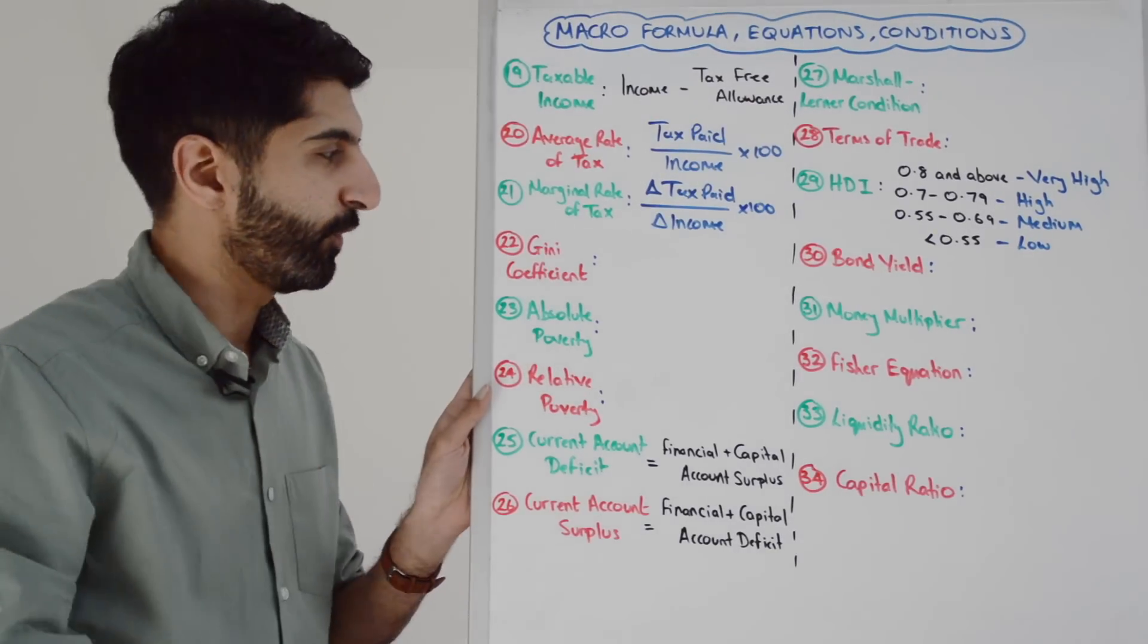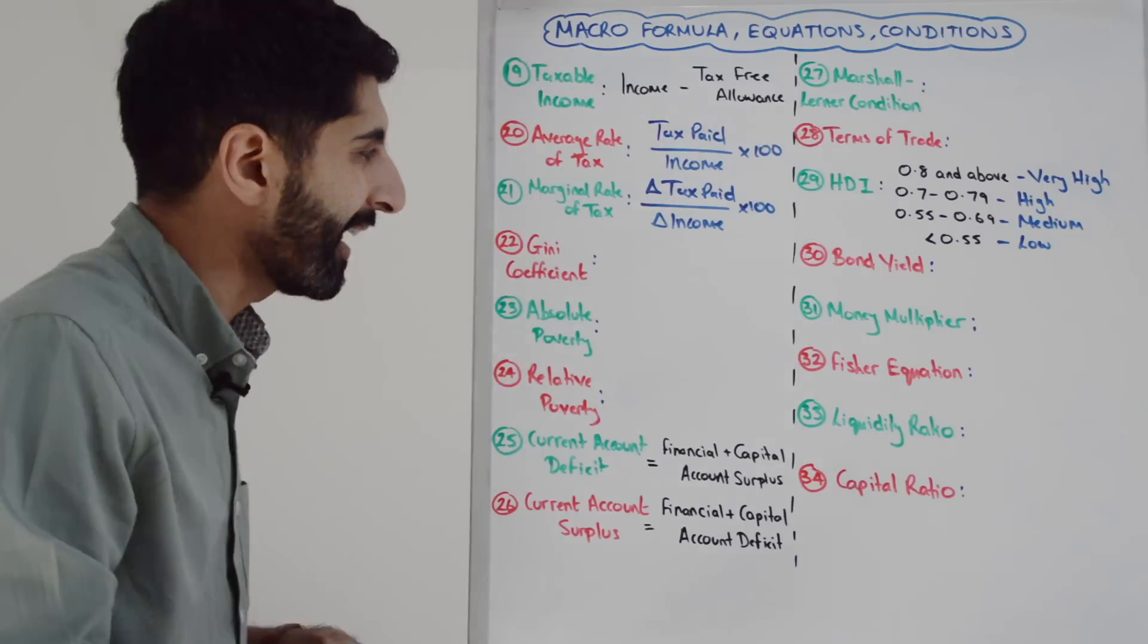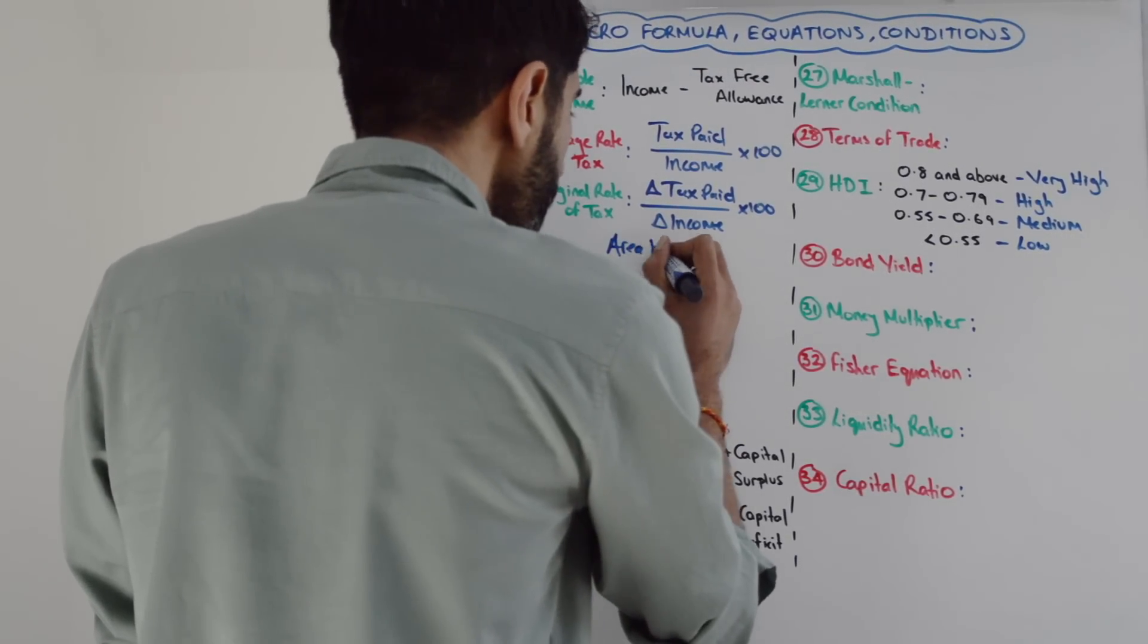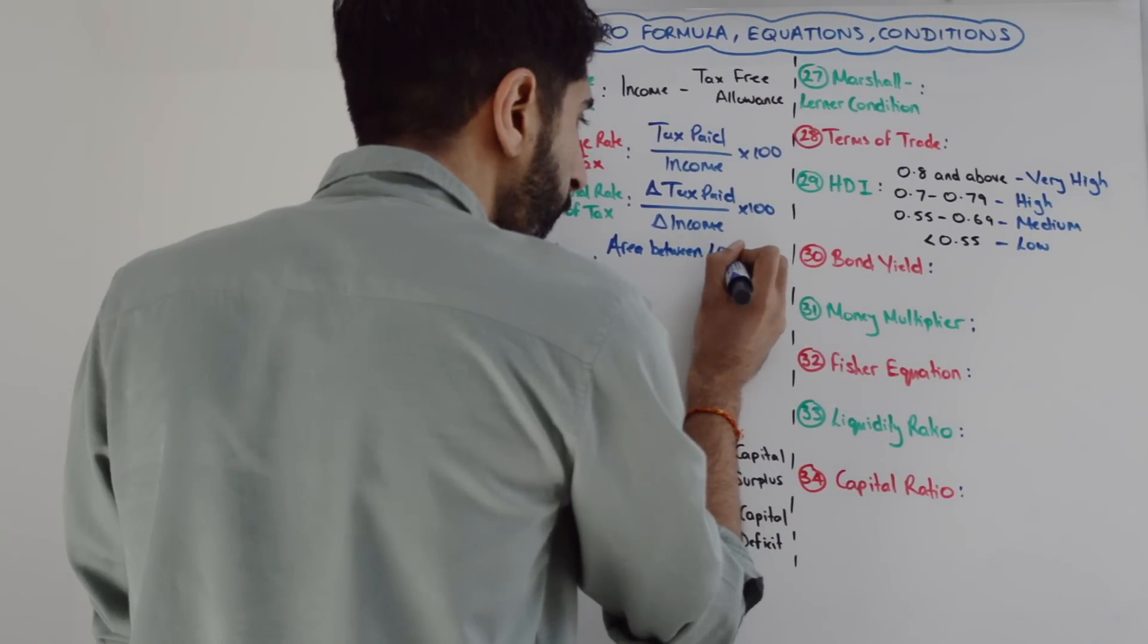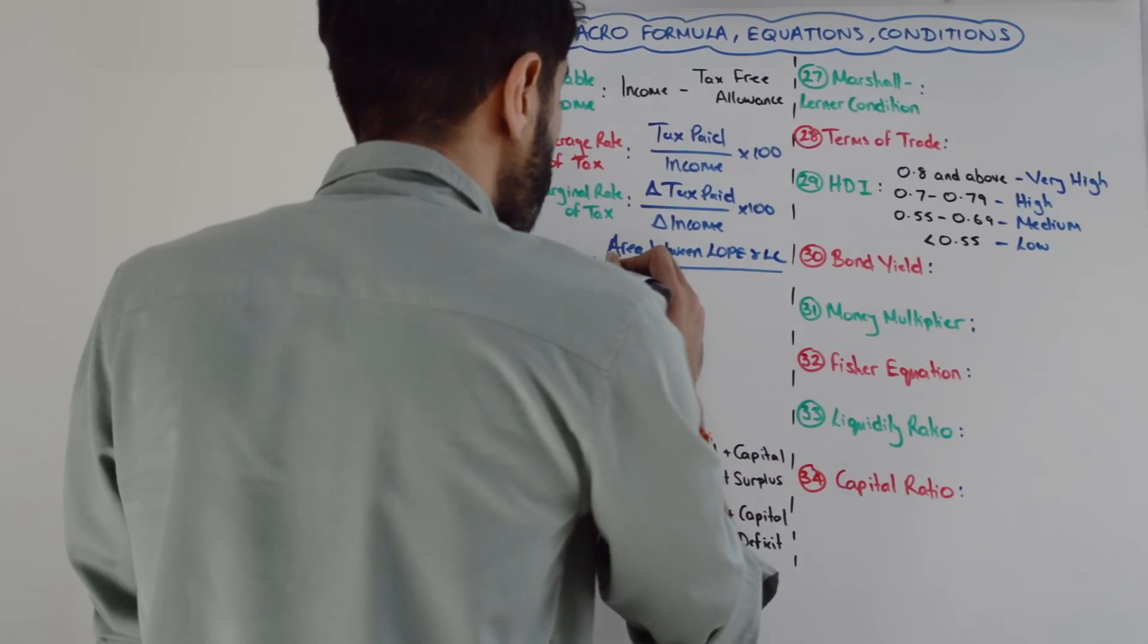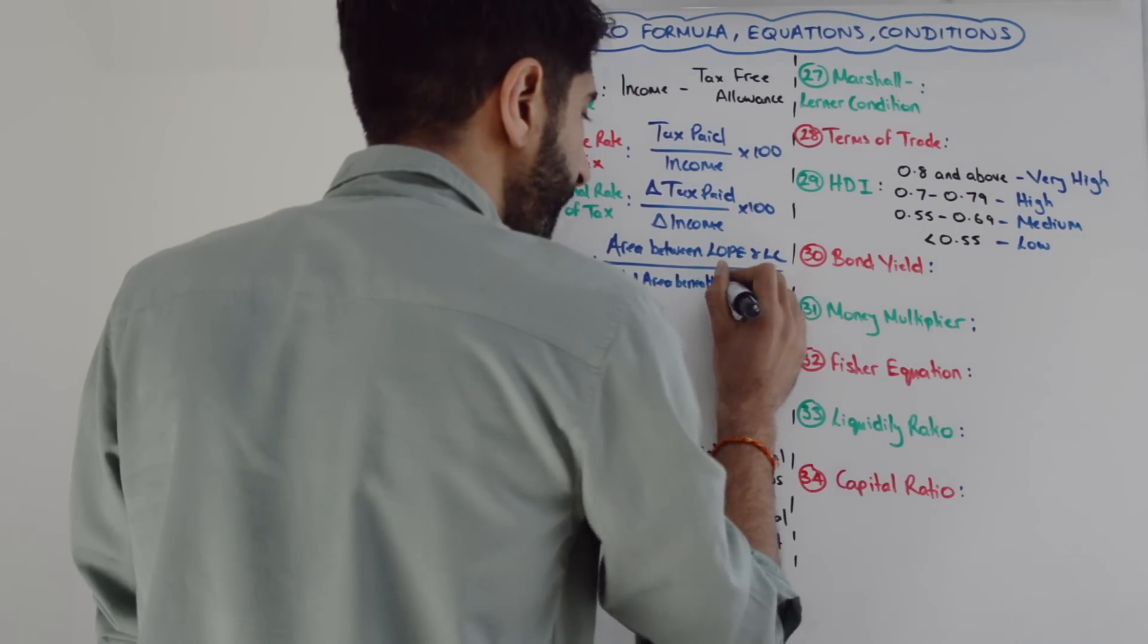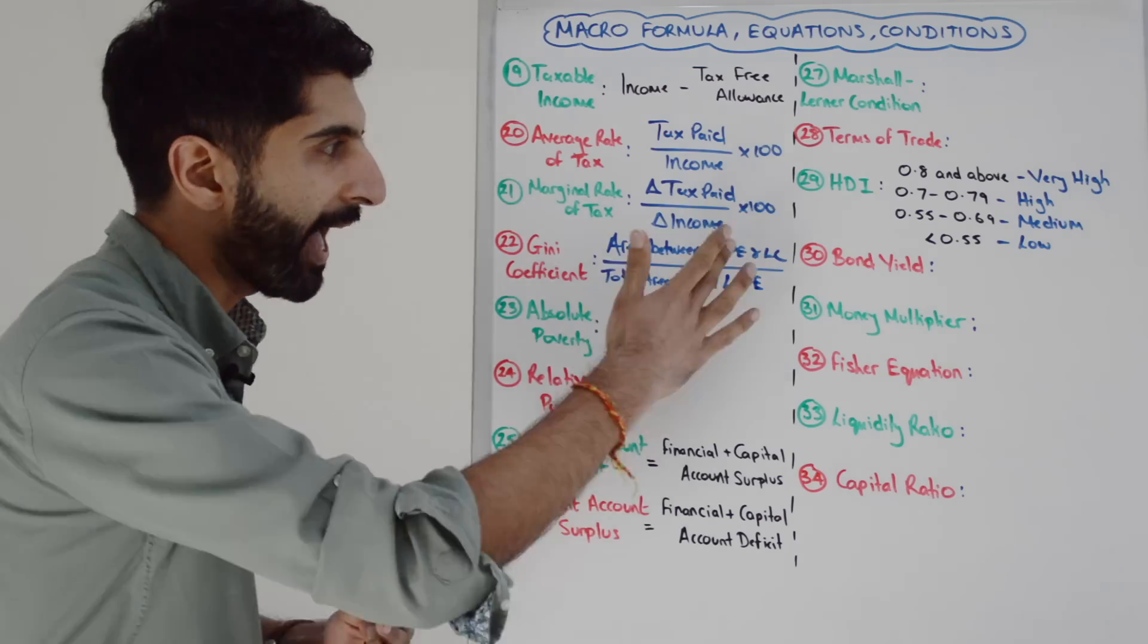The Gini coefficient - learn this in words as opposed to using letters. The Gini coefficient is the area between the line of perfect equality and the Lorenz curve, divided by the total area beneath the line of perfect equality. LOPE is the line of perfect equality, LC is your Lorenz curve.